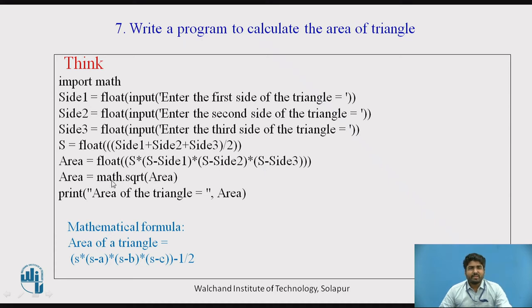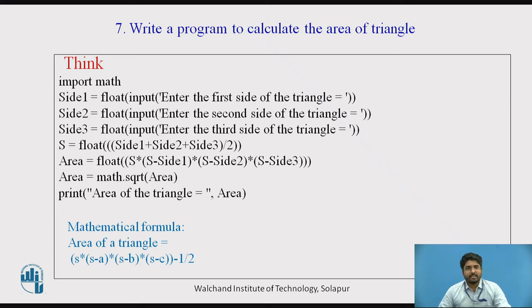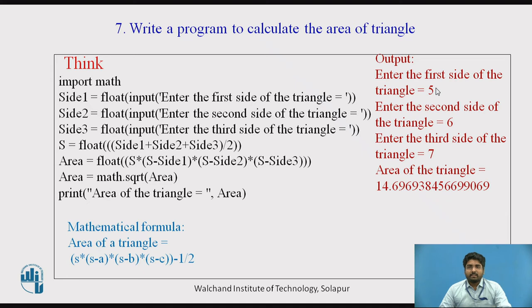Then area = s × (s−a) × (s−b) × (s−c), where a, b, c are side1, side2, side3. We use a math function to calculate the square root of this expression — math.sqrt(area) gives the area of the triangle. Alternatively, we can raise the expression to the power 0.5 using the ** operator to get the same result. If the user enters three sides as 5, 6, and 7, the area of the triangle would be 14.69.